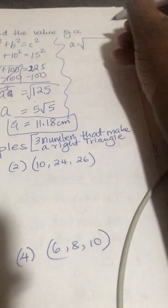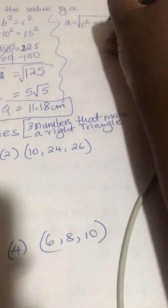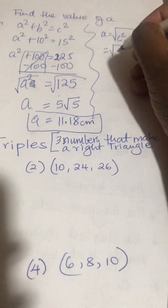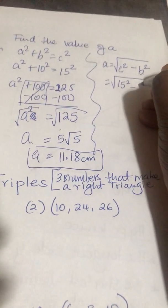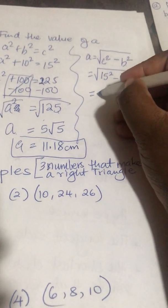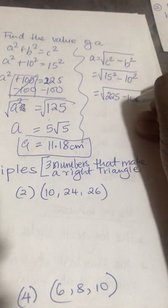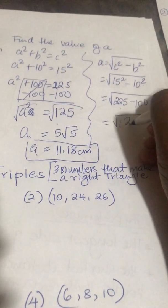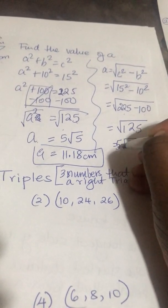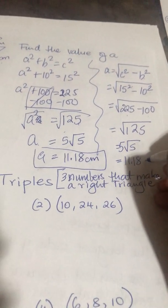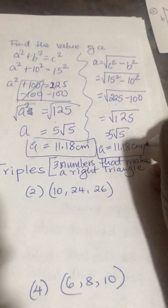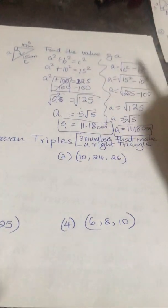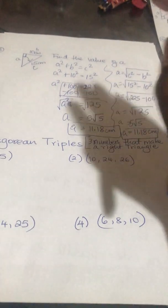Another way of doing it: a equals the square root of c squared minus b squared. Remember, c is always bigger than b, and c is also bigger than a. When you check your work, make sure the numbers you have written match that rule. So it's the square root of 15 squared minus 10 squared, which is 225 minus 100, the square root of 125, which equals 5 root of 5, or 11.18 centimeters. Two different ways — you choose the easiest way.